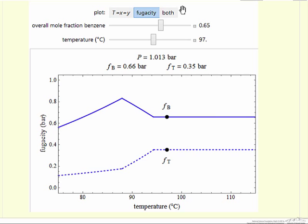The thing to note is that, for example, if we look at component B, benzene, as we raise the temperature in the liquid phase, the fugacity is increasing exponentially because the fugacity is the liquid phase mole fraction, which in this case is 0.65 times the saturation pressure, and the saturation pressure is increasing exponentially with temperature.